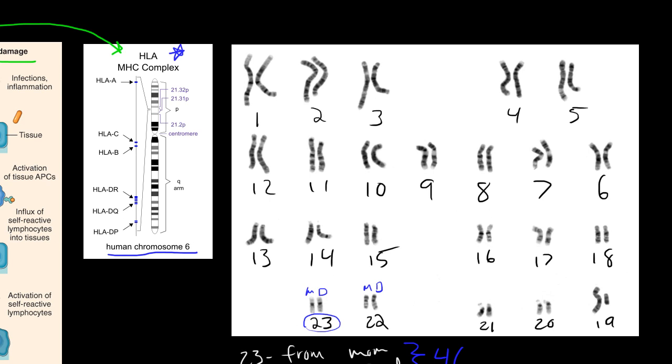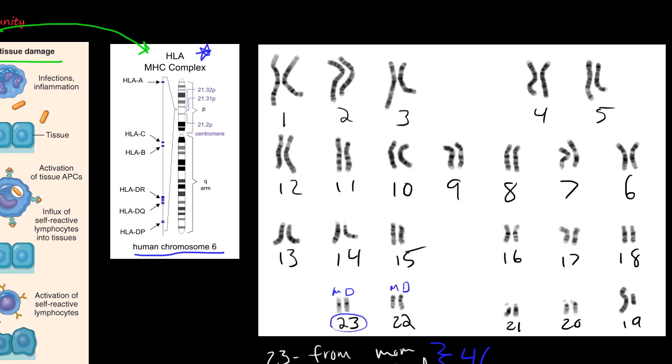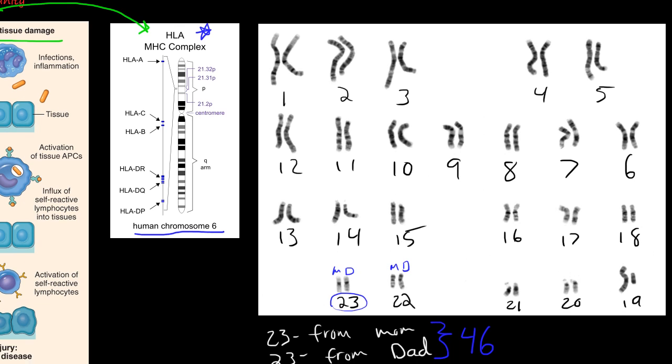So on human chromosome 6, either inherited from your mom or your dad. Oh, I'm sorry if you can't see that down there. Hopefully you can just see what I did. 23 from your mom and 23 from your dad, which is a total of 46 pairs, or 46 chromosomes, 23 pairs. And so on human chromosome number 6, in a section of this chromosome, there is this HLA loci, or this portion, if you will, of this chromosome where all the major histocompatibility complex molecules are coded.